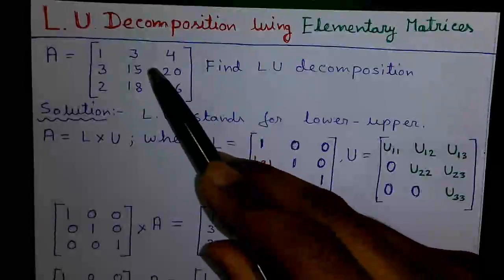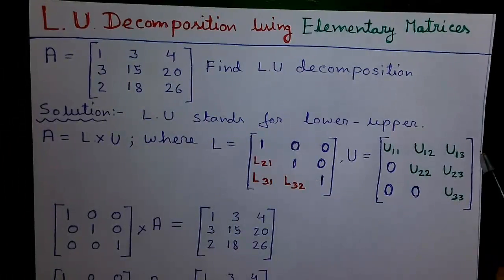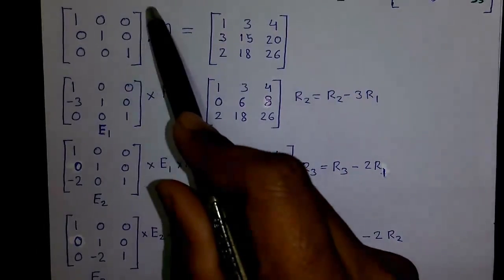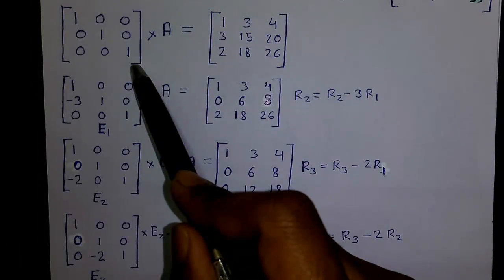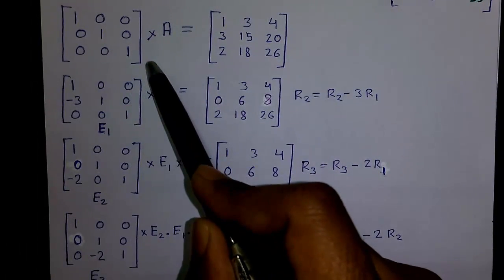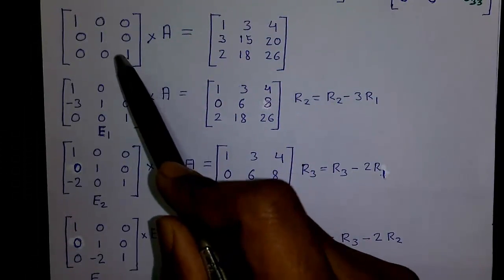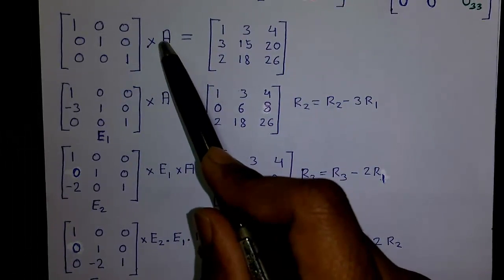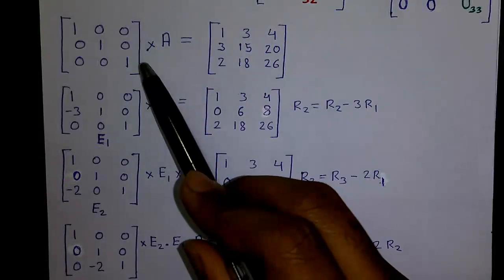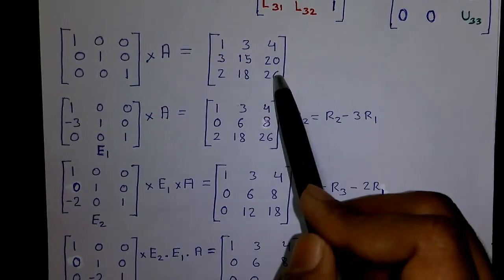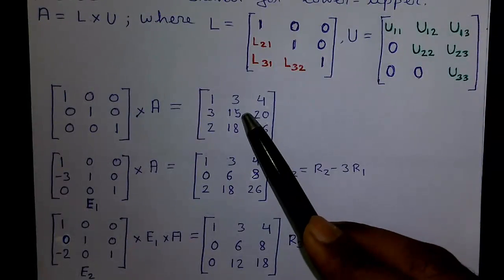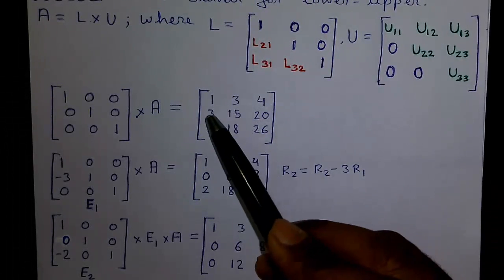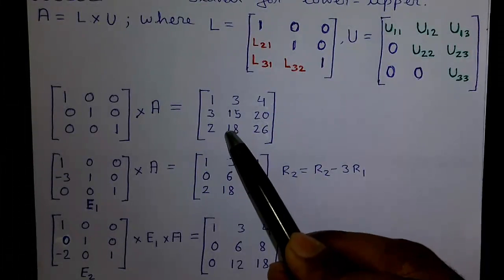Our objective is to decompose or break down matrix A into two sub-matrices. First, we will convert matrix A into the upper triangular matrix U. For that, we start by writing an identity matrix — a matrix where all diagonal elements are 1 and every other element is 0. Since the identity matrix times A equals A, we use this as our starting point and will get zeros at three positions below the diagonal.